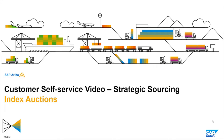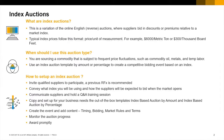In this video I shall cover the index-based auction type used to buy goods and services that are subject to frequent price fluctuations. This type of auction is a variation of the online English reverse auction where suppliers bid in discounts or premiums related to a market index.